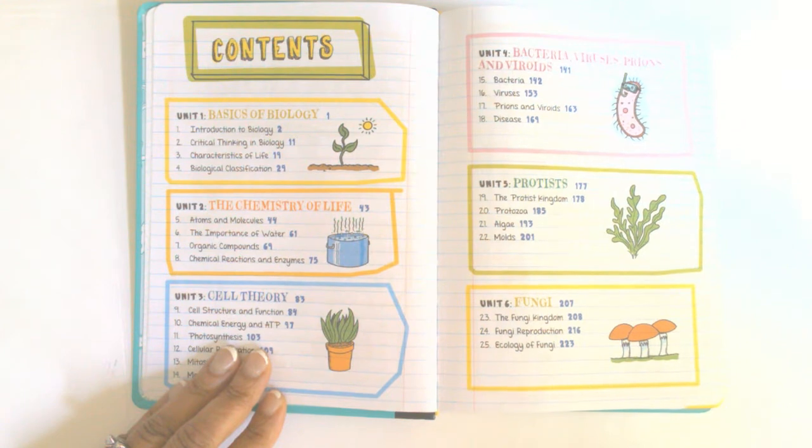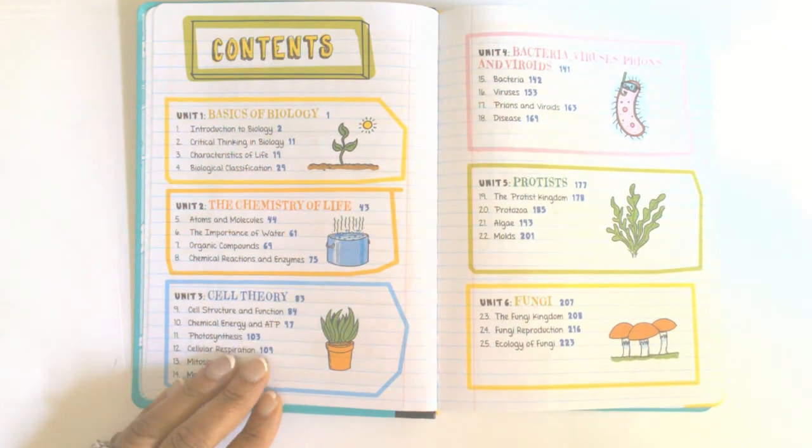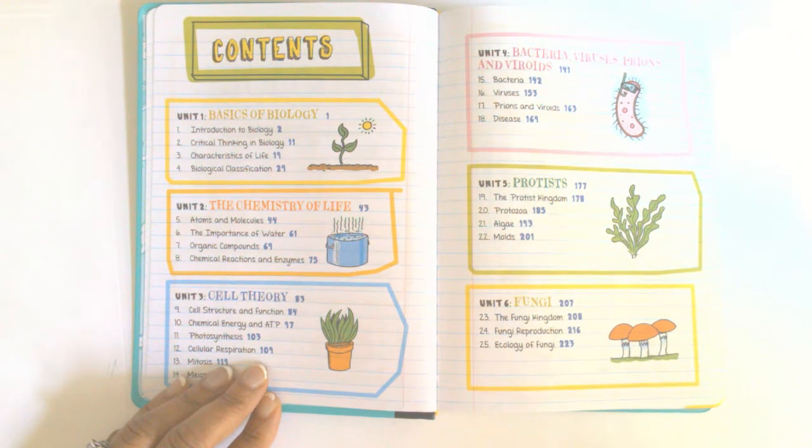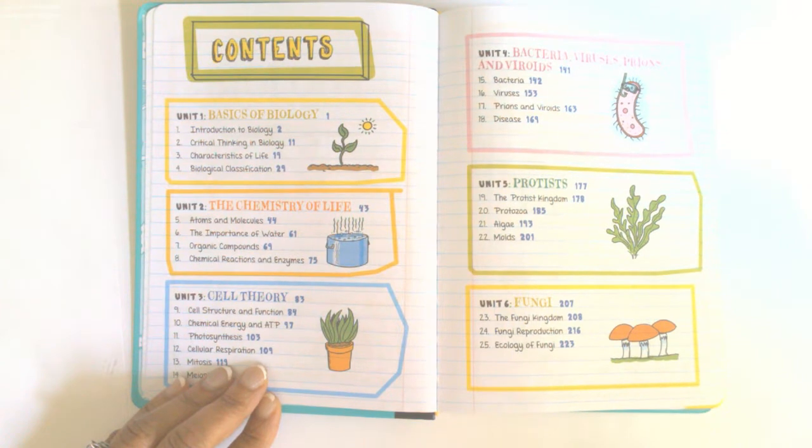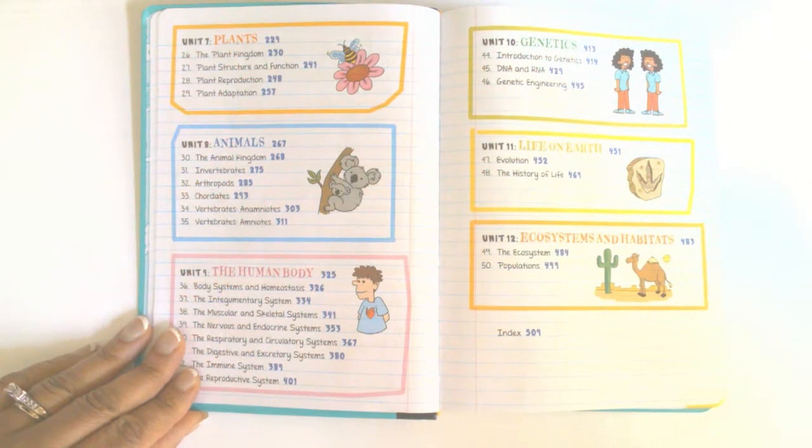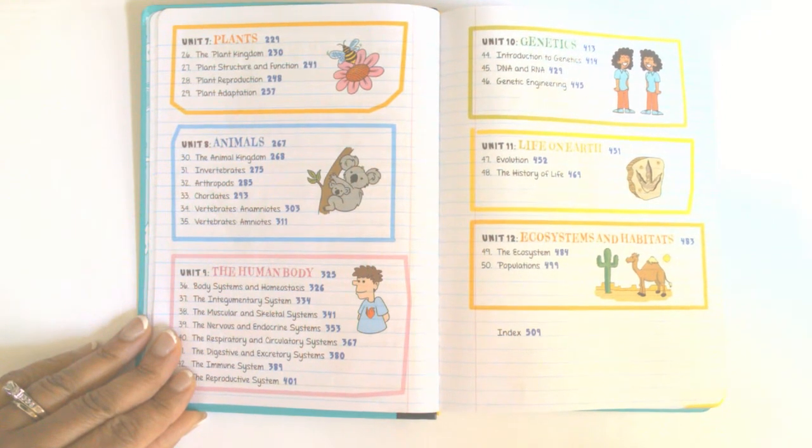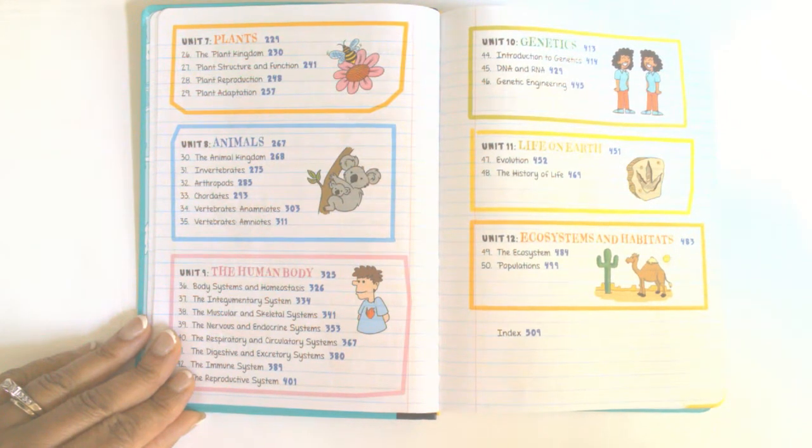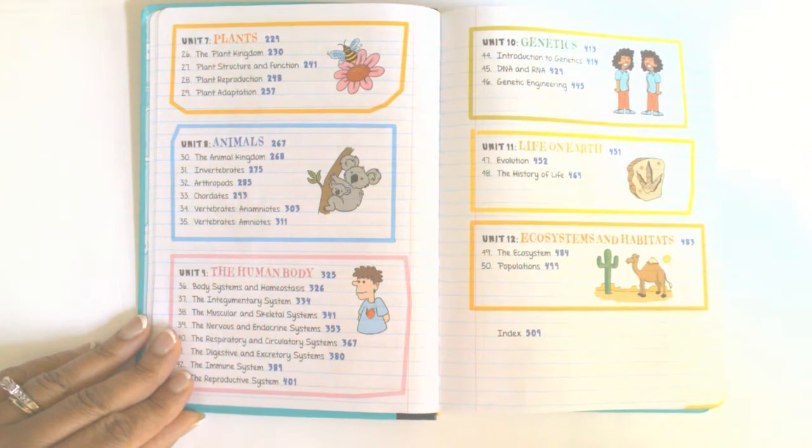We have the table of contents: unit 1 basis of biology, unit 2 the chemistry of life, unit 3 cell theory, unit 4 bacteria, viruses, prions, and viroids, unit 5 protists, unit 6 fungi, unit 7 plants, unit 8 animals, unit 9 the human body, unit 10 genetics, unit 11 life on earth, unit 12 ecosystems and habitats, and they include an index.